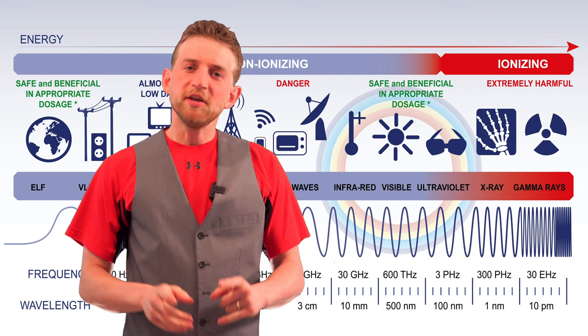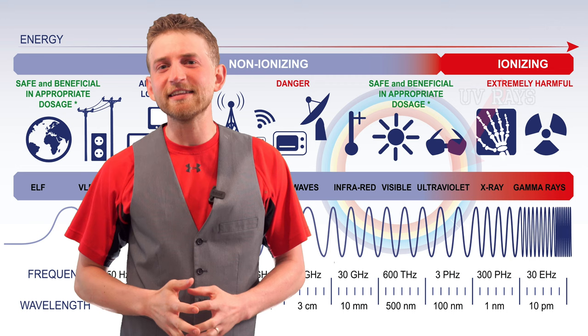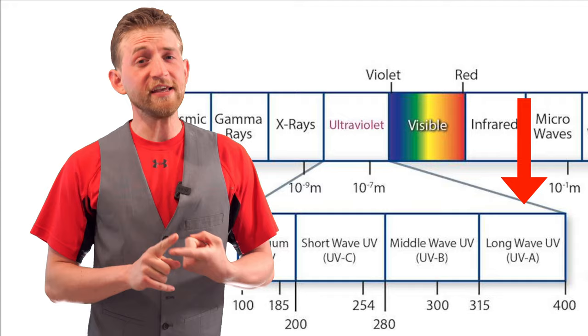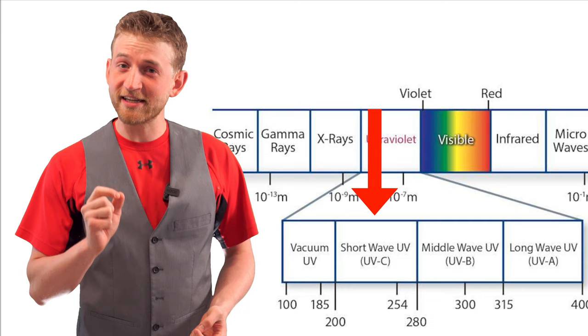UV radiation is on the light spectrum — specifically, it's just off to the side of visible light. UV radiation is produced by the sun and it comes in four forms. There's the two most common that you're probably familiar with: UVA and UVB. Then there's also UVC, which really, really wants to kill you. And then there's UV vacuum, but we're not really going to talk about that because those UV rays can only exist in a vacuum setting.